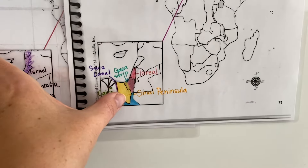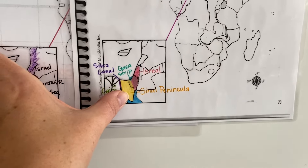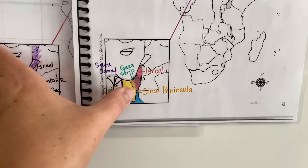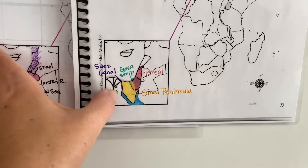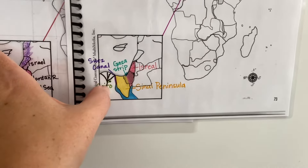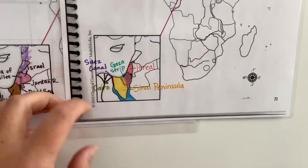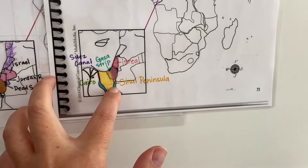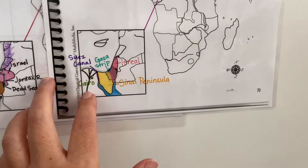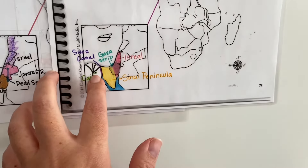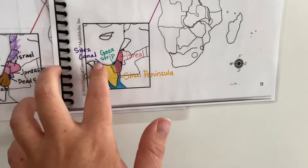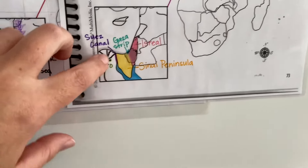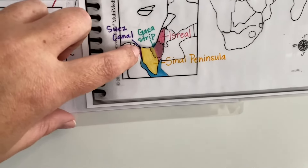We now have the Sinai Peninsula, which is where Moses led his people to Mount Sinai after they escaped from Egypt. This is Egypt in modern day, and the Sinai Peninsula is also part of Egypt. This is Cairo, this is the Nile River Delta — we've already learned this.